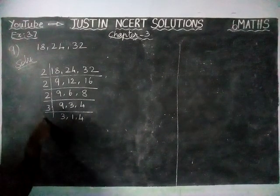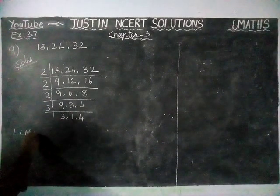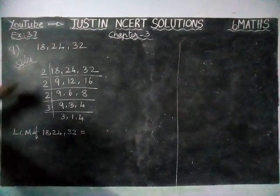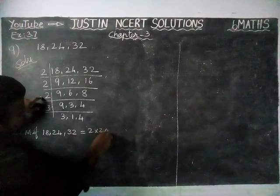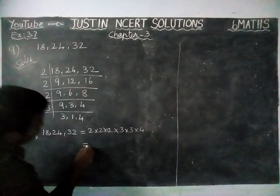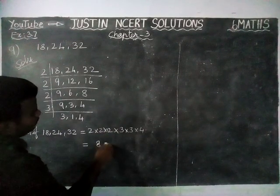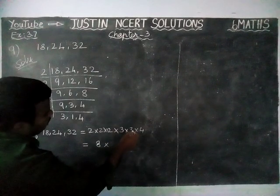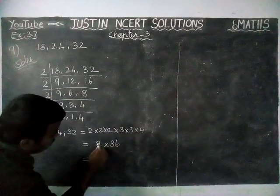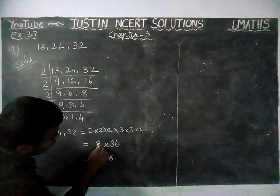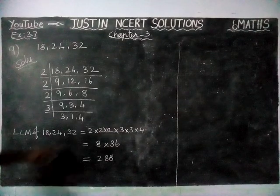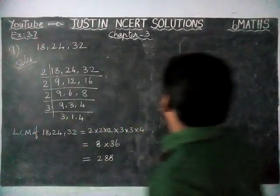So we are going to stop here. Now we are going to multiply all these numbers to get the LCM of 18, 24 and 32. Multiplying: 2 × 2 × 2 × 2 × 3 × 3 × 4. That gives us 8 × 36 = 288. So the LCM of 18, 24 and 32 is 288.